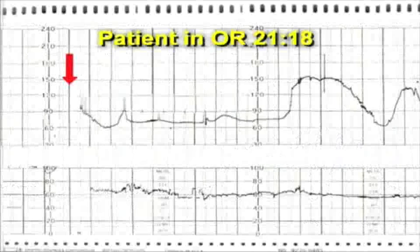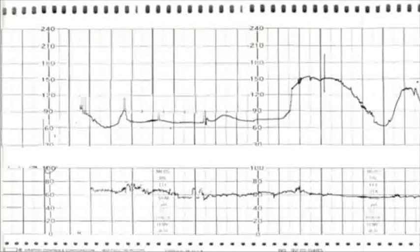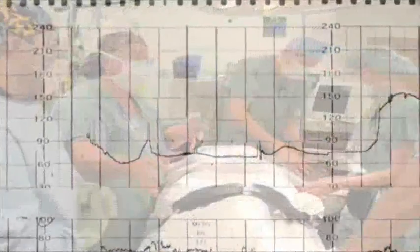The patient arrives in the OR at 2118, ten minutes after the onset of the fetal bradycardia. The OR crew is immediately present. The fetal heart rate is now 70 beats per minute, with occasional increases to 90 beats per minute, lasting for 10 to 15 seconds.